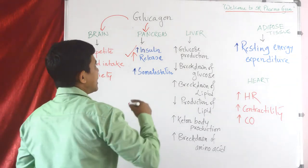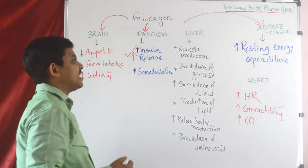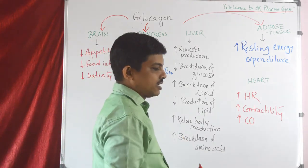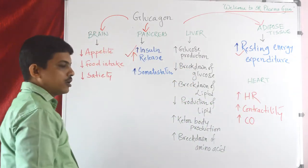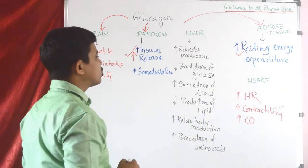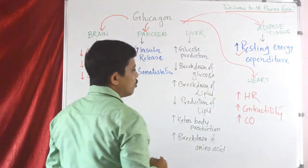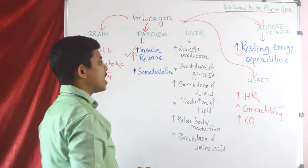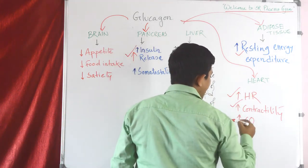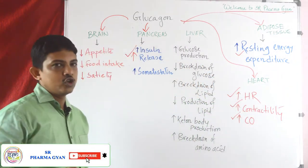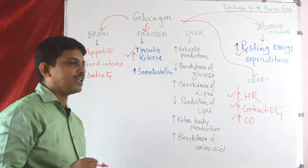In adipose tissue, resting energy expenditure is increased by glucagon. Regarding glucagon's effect on the heart, it increases heart rate, increases contractility, and increases cardiac output.